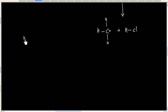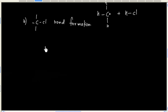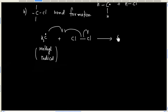The next part of the propagation step is carbon-chlorine bond formation. The methyl radical reacts with a chlorine molecule, and it finally regenerates the chlorine radical.